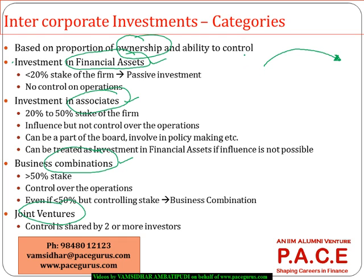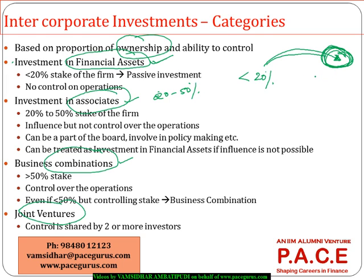The naming is primarily based on the percentage of ownership. If you have bought less than 20 percent stake — if your investment is worth less than 20 percent of the firm's value — we call it investment in financial assets. If it is somewhere between 20 to 50 percent of the total value, we call it investment in associates. If your investment is more than 50 percent, we treat it as a business combination.